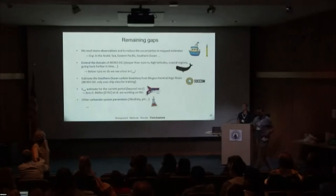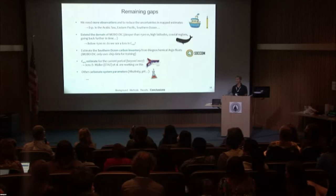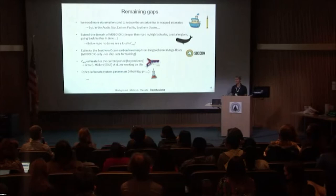Question from the audience: about the river flux — I understand the concept, but when we add the pre-industrial river flux to the observed net air-sea CO2 flux to get the anthropogenic CO2, I can envision most of that river flux going back to the atmosphere in the nearshore area. When you compare that to your MOBA-DIC anthropogenic CO2, that's open ocean, deep ocean. That seems to add uncertainty to how we really compare and match these estimates up.